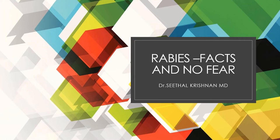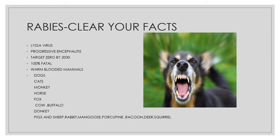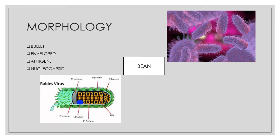Today we will discuss rabies. Rabies belongs to Lyssavirus and produces progressive encephalitis. It is 100% fatal and affects warm-blooded mammals. Rabid dogs account for 99% of cases, and bats are now the major source in America. Other mammals include dogs, cats, monkeys, horses, and foxes.